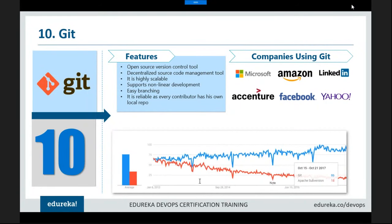Git is one of the most popular open source version control tools. Version control simply means maintaining multiple versions of the same code. If you are working on any project with many changes being done step by step, for each change done on a file a separate version will be saved, so you can roll back to a previous change easily using a version control tool.